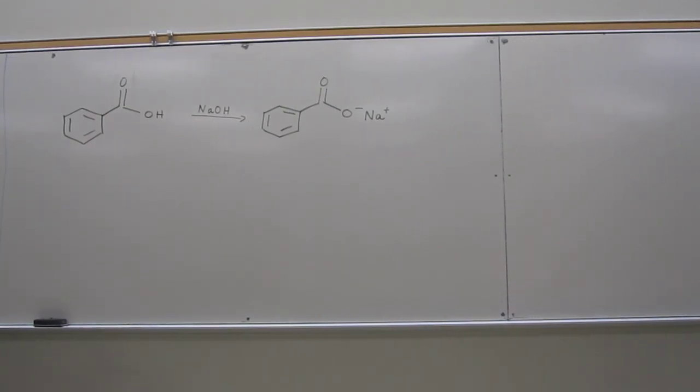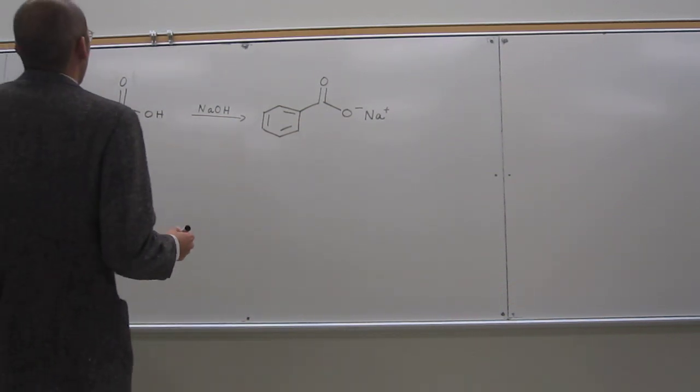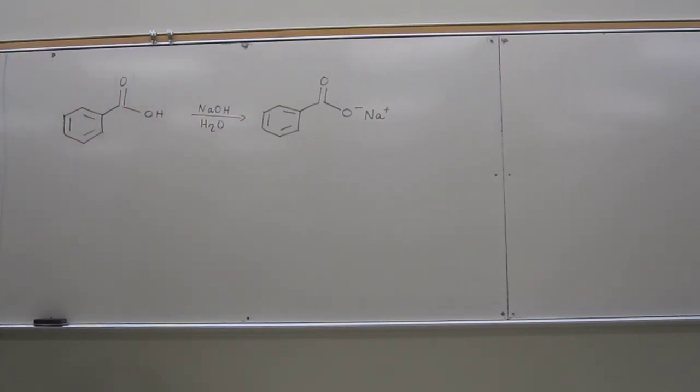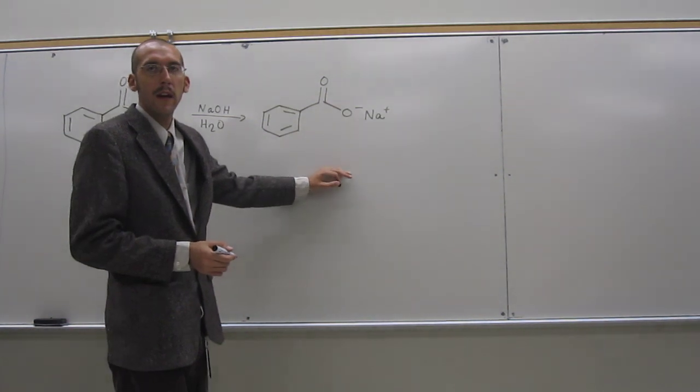OK, so this is the first mechanism, and the carboxylic acid unit, of course. Fairly straightforward. Well, we can put a solvent in here if we want to. OK, so this is taking benzoic acid and making sodium benzoate out of it.